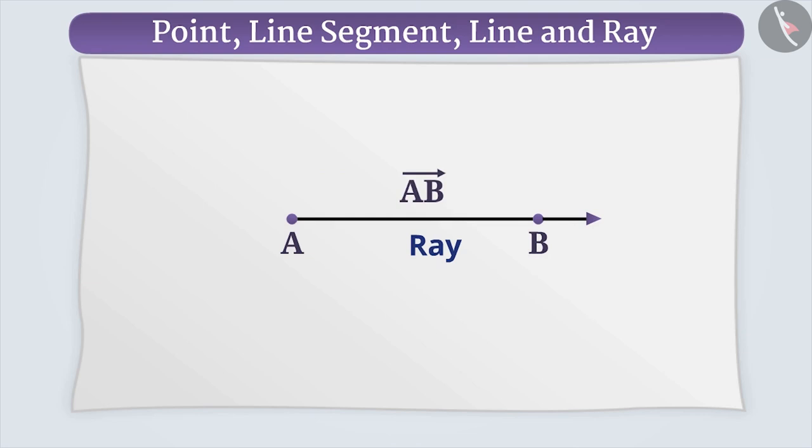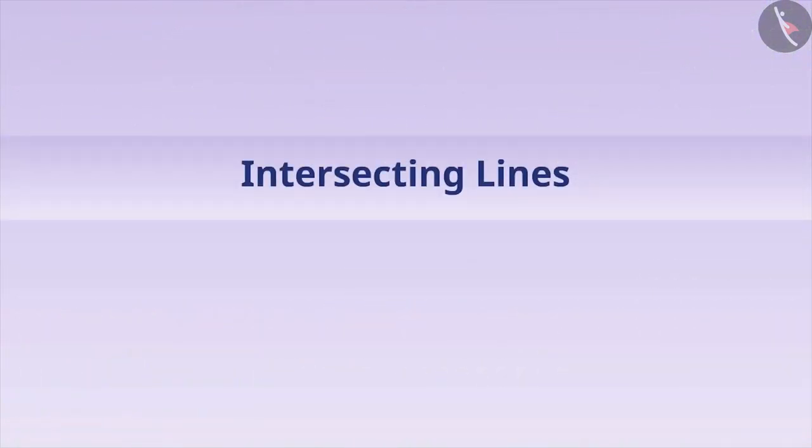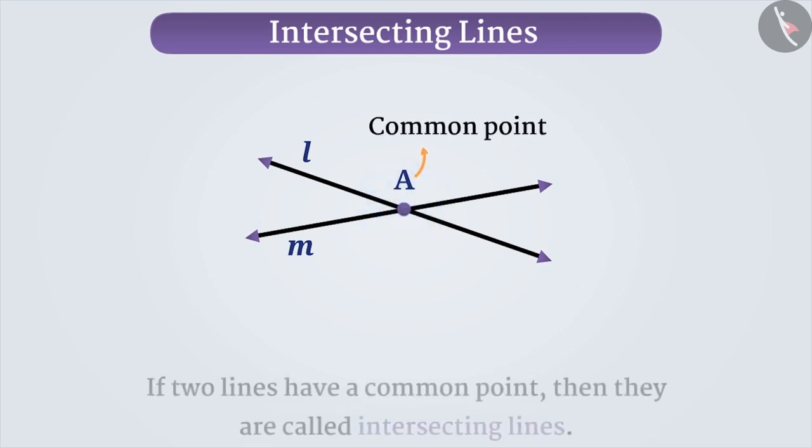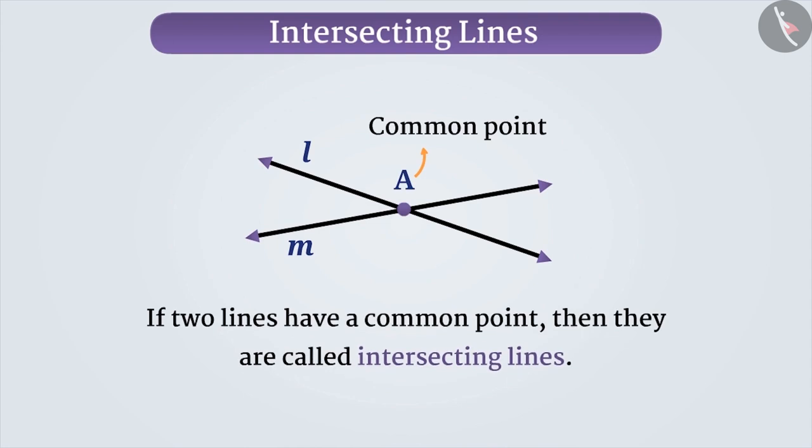Now let's understand geometry more thoroughly by understanding intersecting lines and parallel lines. Look at the given figure. Here the line L and the line M passes through a point. We can say that these two lines have a common point. If two lines have a common point, then they are called intersecting lines.